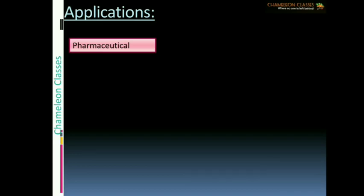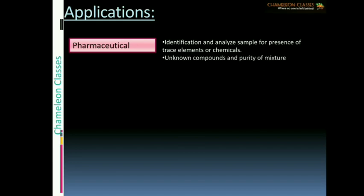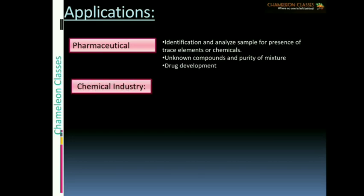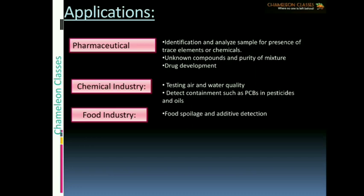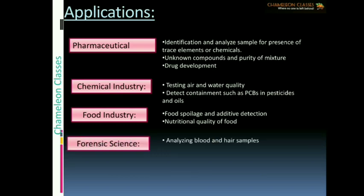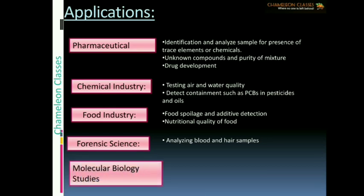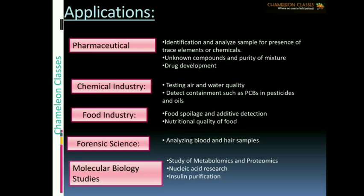Chromatography has wide applications. In the pharmaceutical industry, it is used for identification and to analyze samples for the presence of trace elements or chemicals, to detect unknown compounds and the purity of a mixture, and in drug development. In chemical industries it is used for testing air and water quality and detecting contaminants such as PCBs (polychlorobiphenyls) in pesticides and oils. In the food industry it is used to detect food spoilage, additives, and nutritional quality. It is also used in forensic science to analyze blood and hair samples, and in molecular biology for metabolomics, proteomics, nucleic acid research, insulin purification, and plasma vaccination.